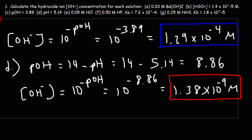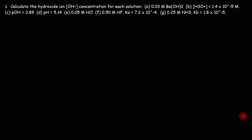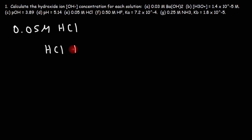Now let's move on to part E. We have an acidic solution with hydrochloric acid at a molarity of 0.05 M. How can we calculate the hydroxide ion concentration? HCl is a strong acid — when we mix it with water it's going to completely dissociate